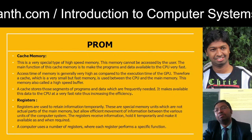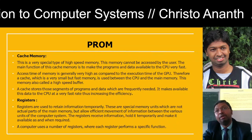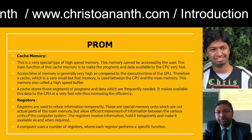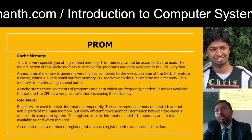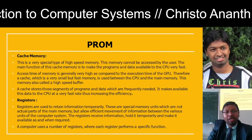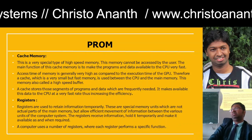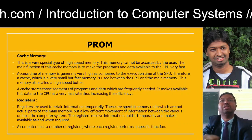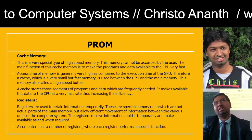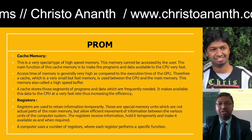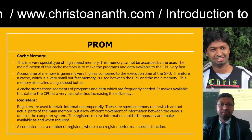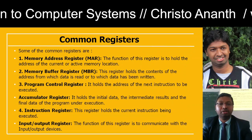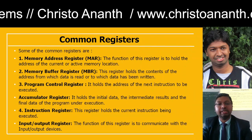Registers are used for retaining information temporarily. They are memory units that are not actual parts of main memory but allow efficient movement of information between various units. Registers receive information temporarily, hold it, and make it available. The computer uses a number of registers — R1, R2, R3, R4, etc. — and every register performs a specific function. Common registers include memory address register, memory buffer register, program control register, accumulator register, instruction register, and input/output register.